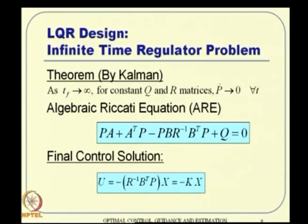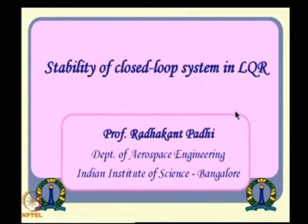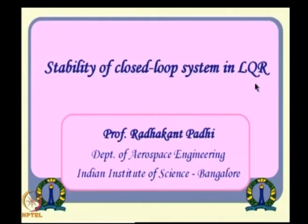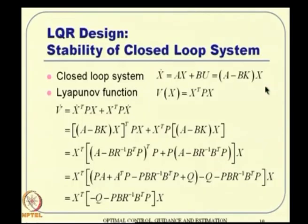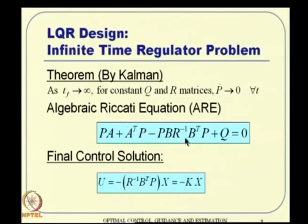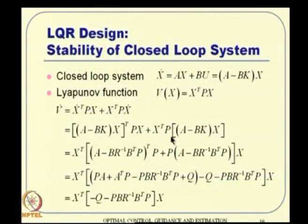Now we show stability of the closed loop system in LQR — for the infinite time formulation. We have the closed loop system X-dot = AX + BU and define the Lyapunov function V(X) = X transpose P X. Then V-dot(X) = X-dot transpose P X + X transpose P X-dot. Since we are in the infinite time case, P is a constant matrix, so P-dot is not involved.